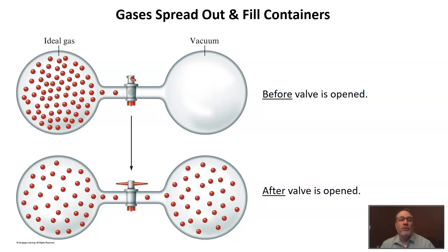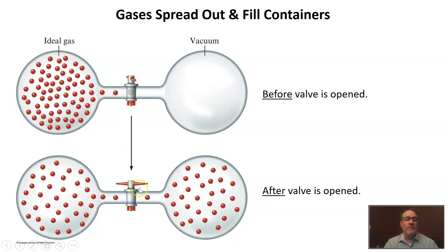One of the things we've already talked about is the fact that gases can spread out and fill any container we put them into. If we look at this picture, suppose we have these two containers — two chambers — and there's nothing on one side and we have a gas on the other side. When we open up this little valve and open this pathway, that gas is going to immediately begin to spread out and fill both sides equally. This is what we mean by gases spreading out and filling the container.